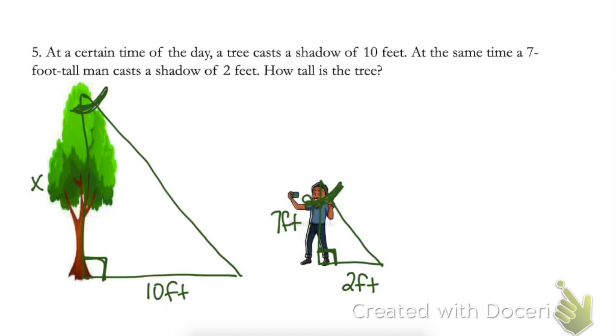If those two angles are all the same, then we know that this bottom right angle also has to be congruent. So I've got similar triangles going on here. I know that my sides are proportional. So I'm going to set up a proportion to solve.